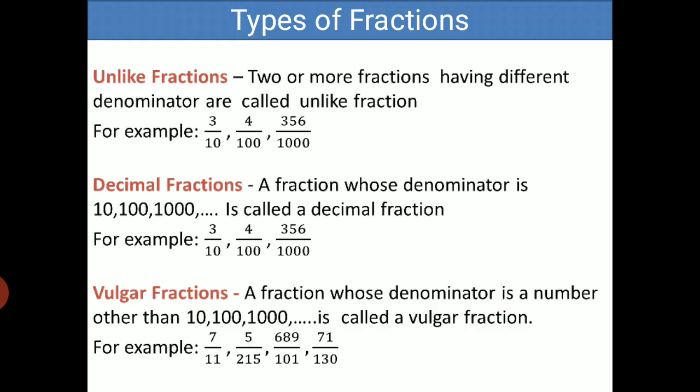Next is unlike fractions. Two or more fractions having different denominators, then they are called unlike fractions. For example: 3 by 10, 4 by 100, 3,506 upon 1000.